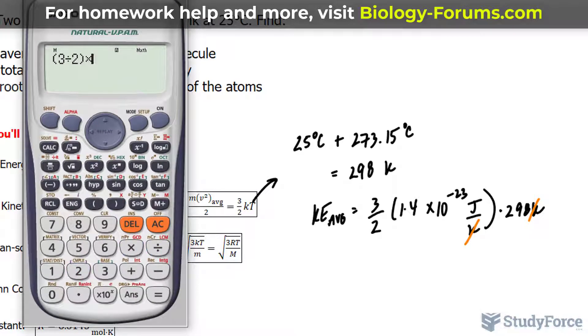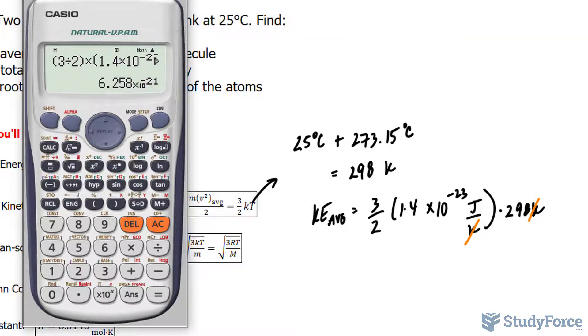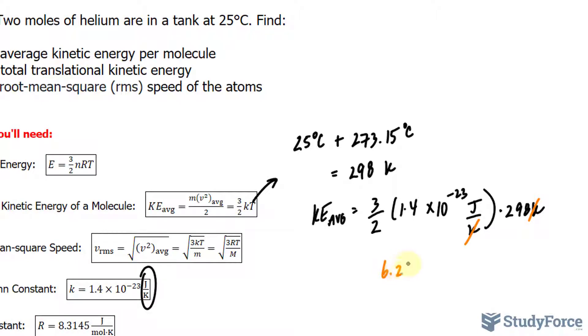3 over 2 times 1.4 times 10 to the power of negative 23 multiplied to 298. The final answer is 6.258 times 10 to the power of negative 21. And we'll round that to three significant figures, so 6.26 times 10 to the power of negative 21 joules.